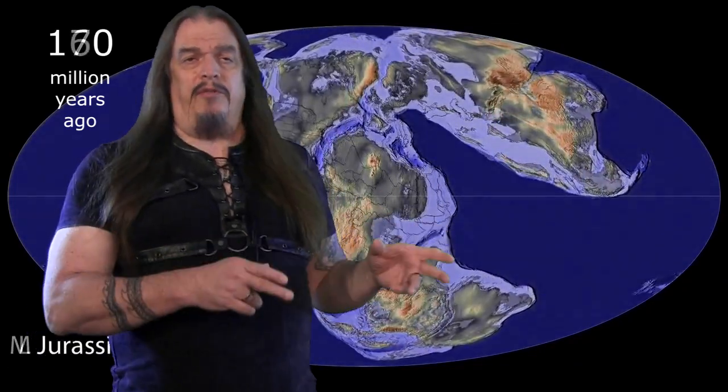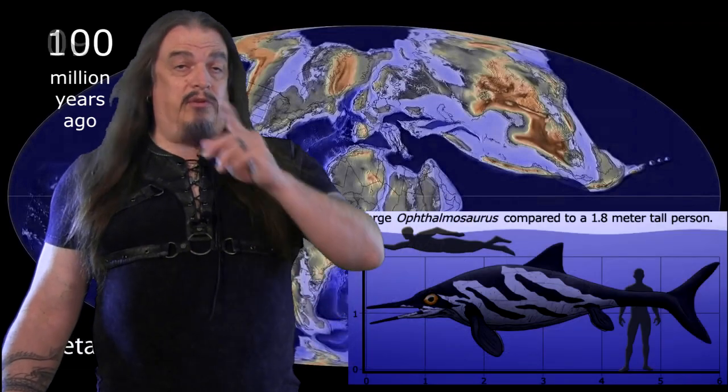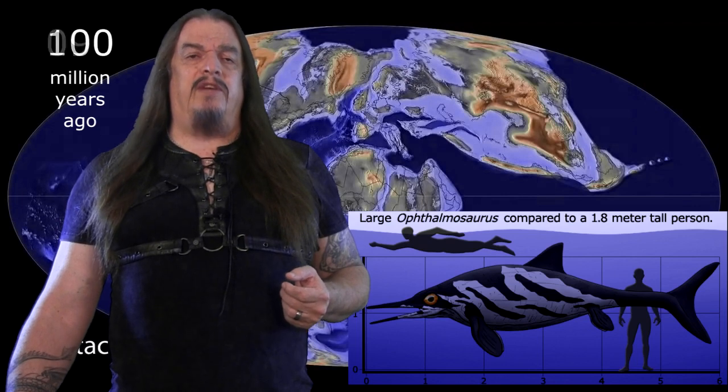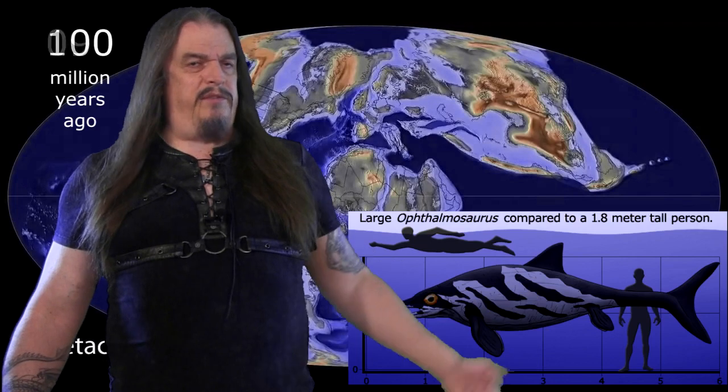Last episode we looked at how Boreoeutheria split from Atlantogenata, which was divided between Xenarthrans in South America and Afrotherians in Africa. Boreoeutheria also divided into the two remaining placental super-orders, emerging and diverging from what was then the supercontinent of Laurasia — which was essentially the same as modern Eurasia, except under much higher sea levels, making it an unrecognizable cluster of islands separated by shallow seas, patrolled at that time by the last surviving genus of Ichthyosaurs, a once plentifully diverse group that has since faded into oblivion without explanation.